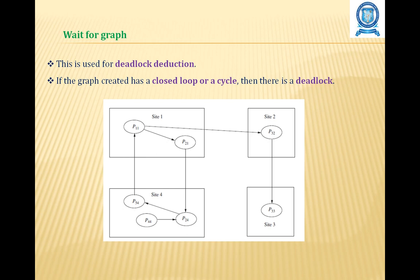Consider a wait-for graph where process P11 of site 1 has an edge to process P21 of site 1 and an edge to process P32 of site 2. Process P32 of site 2 is waiting for a resource currently held by process P33 of site 3. At the same time, process P21 at site 1 is waiting on process P24 at site 4 to release a resource. If process P33 starts waiting on process P24, then the processes in the wait-for graph are involved in a deadlock depending on the request model.